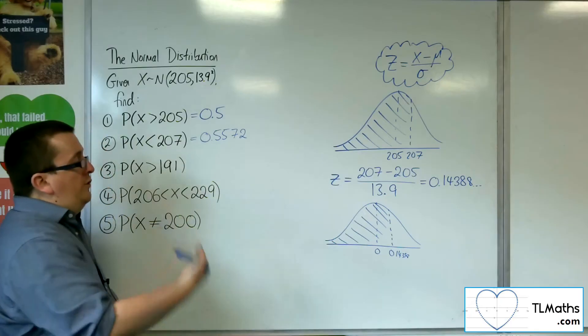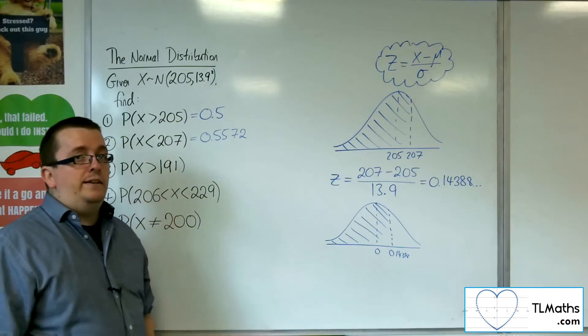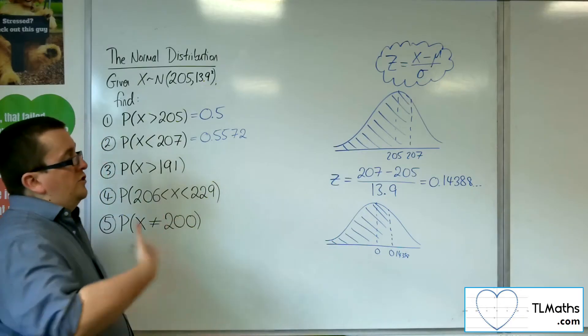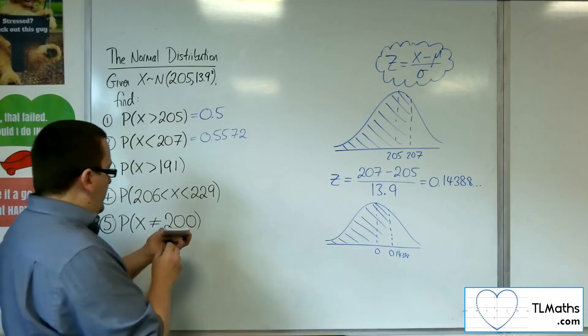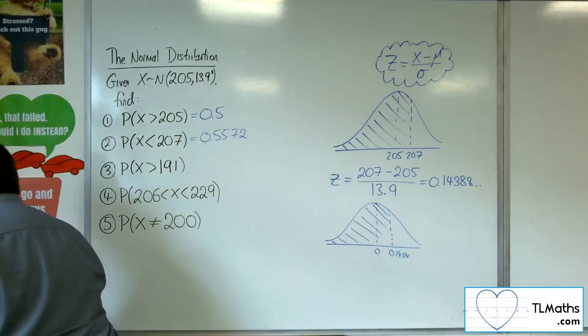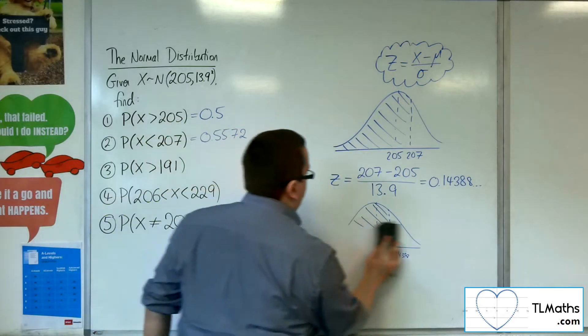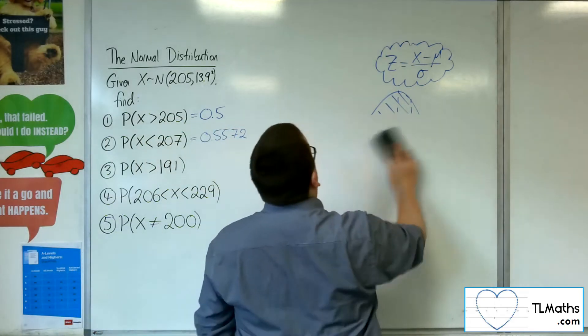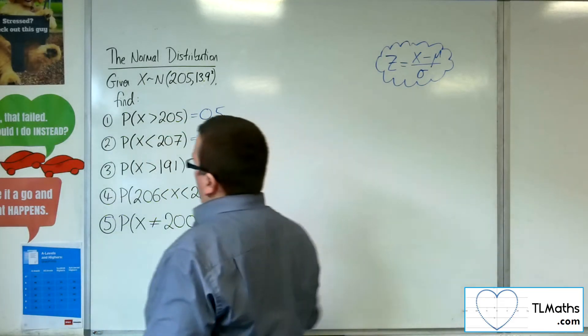So just as long as you use a lower value, it doesn't have to be 10 standard deviations down. Just as long as you use a value that's low down, you will get your correct answer.